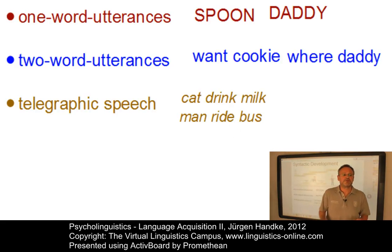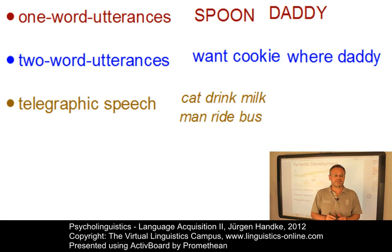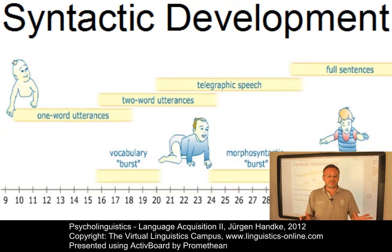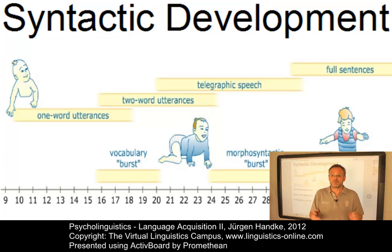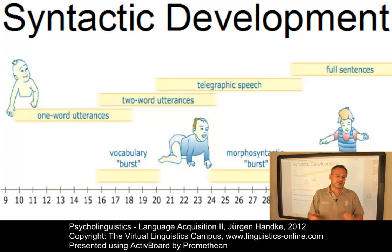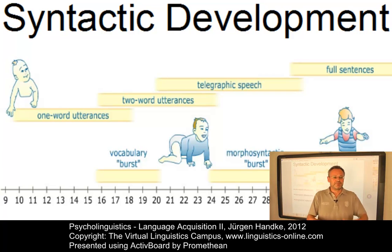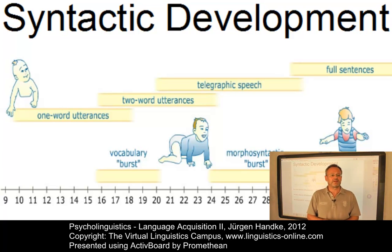From this point onward, language development proceeds at a rapid pace. Within only a few months, children acquire inflectional morphology and function words. From the age of about two years and six months, they produce full sentences of various types and increasing complexity. Before they turn four, most children have figured out the salient grammatical patterns of their language.